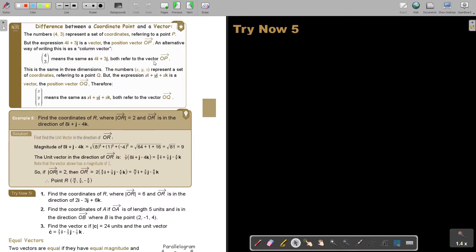This is the same in three dimensions. The number X, Y and Z represent a set of coordinates, referring to a point Q. But the expression XI plus YJ plus ZK is a vector. The position vector OQ, therefore XYZ, means the same as XI plus YJ plus ZK, both refer to the vector OQ.